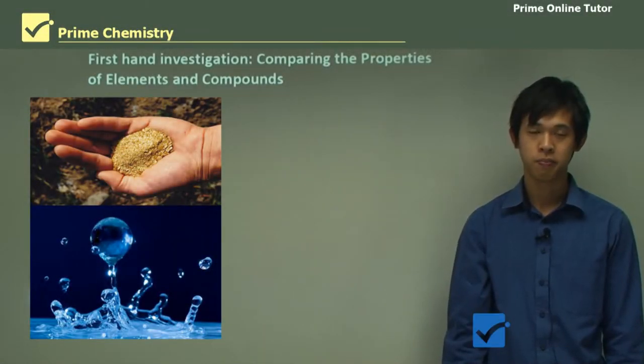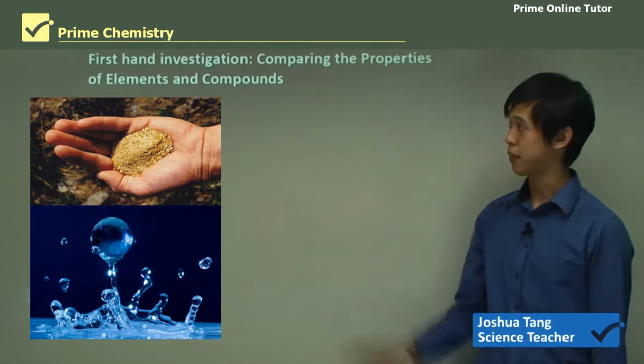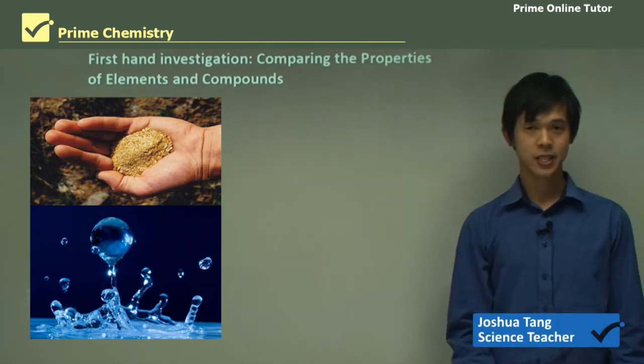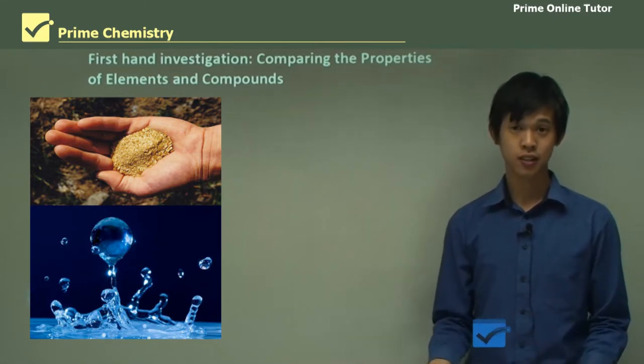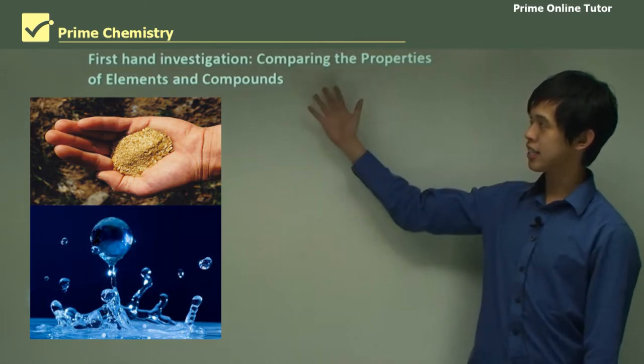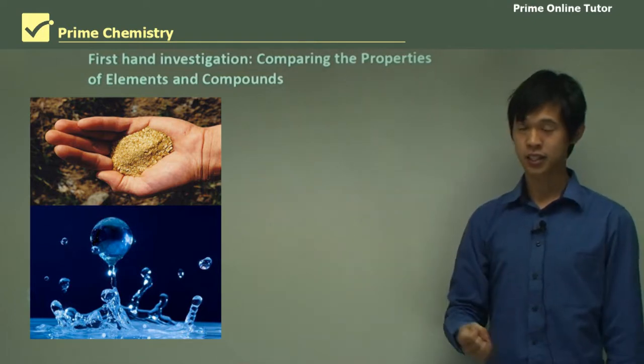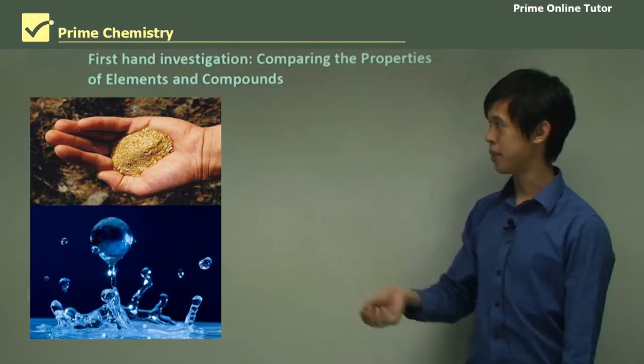Hello, everyone. Welcome again. So today's lesson will be on the chemical Earth. In today's lesson, we've been looking at the theory of ionic bonding, metallic bonding, and all that other stuff. But in this lesson, we're going to look at first-hand investigations comparing the properties of an element and a compound.